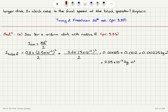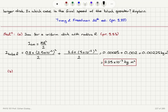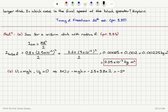That's the answer in SI units. Now let's move on to Part B. The light string is wrapped around the edge of the smaller disc, and the 1.5 kg block is suspended from the free end and released from rest at 2 meters above the floor. It has an initial potential energy mgh; the final potential energy is zero. The change in potential energy is U_final minus U_initial equals minus mgh, which is minus 1.5 × 9.8 × 2 = minus 29.4 joules.